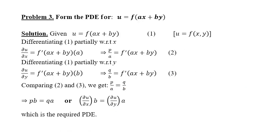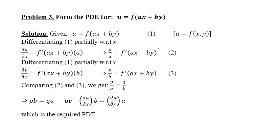When the relationship involves both a general function and constants, the job is to remove the function; constants may remain in the answer. For example, given u = f(ax + by), differentiating with respect to x gives p = f′ · a, so p/a = f′. Differentiating with respect to y gives q = f′ · b, so q/b = f′. Comparing, p/a = q/b, and cross-multiplying gives pb = qa, which is the required PDE.